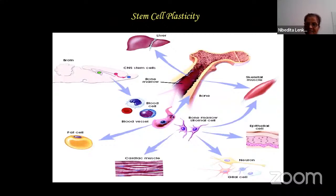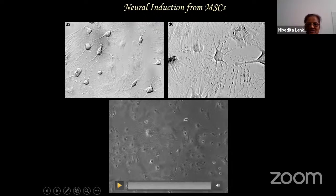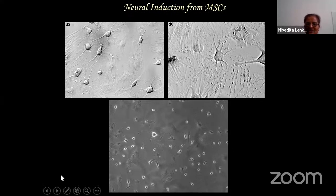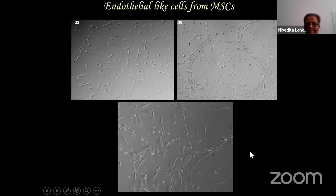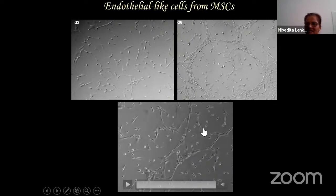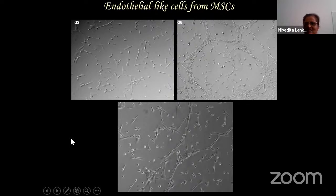Regarding plasticity - cells crossing lineage barriers - hematopoietic stem cells can give rise to neural cells and vice versa. Similarly, mesenchymal stem cells based on specific cocktail of factors can give rise to neural-like cells. You can see morphology changes forming neural structures, or vessel-like endothelial structures. Not only can you differentiate in culture and look under a microscope, but you can monitor live under a live microscope on a time-lapse system. This is the beauty of cell biology - you can understand how cells look, behave, and interact.